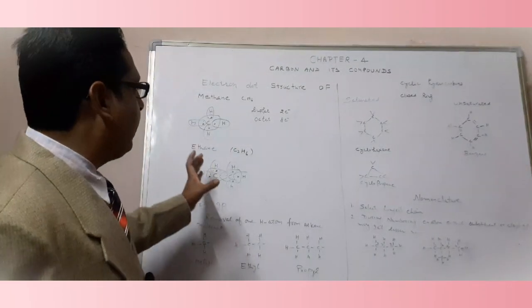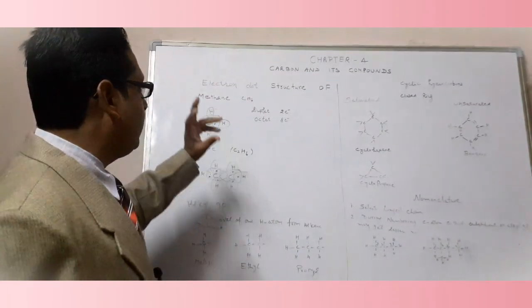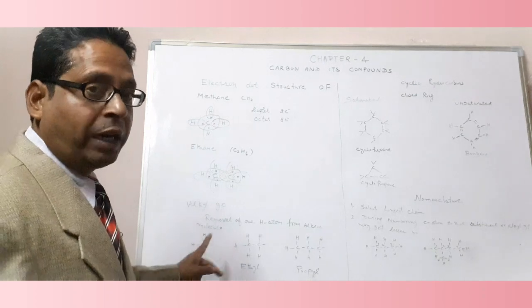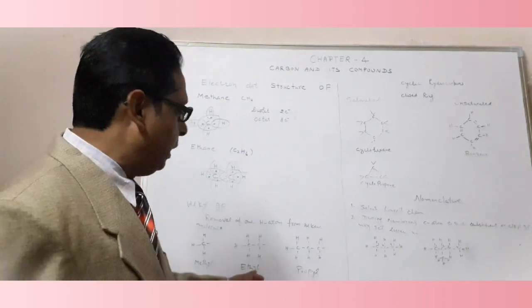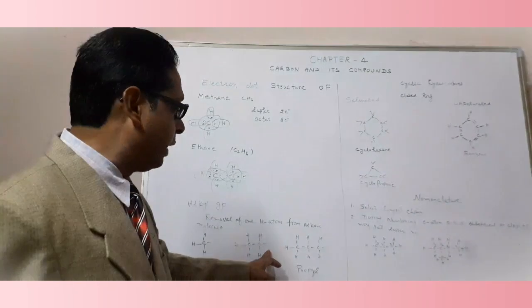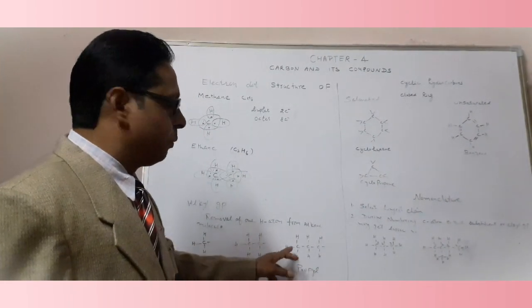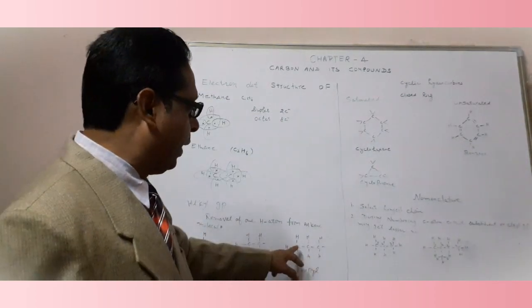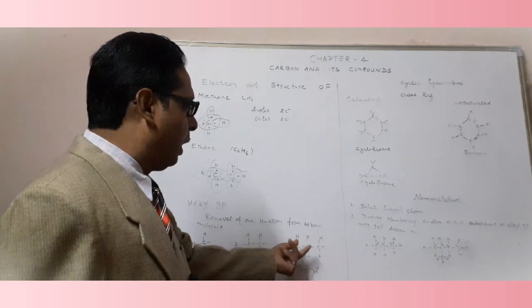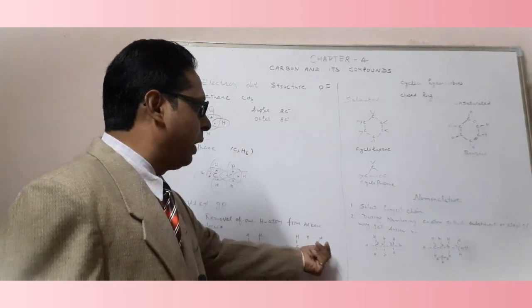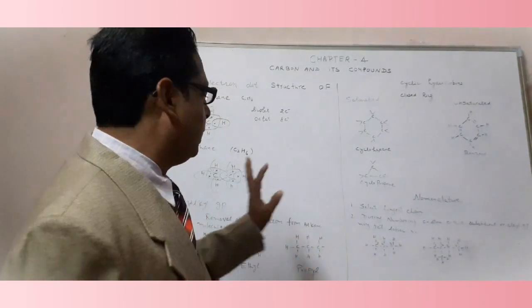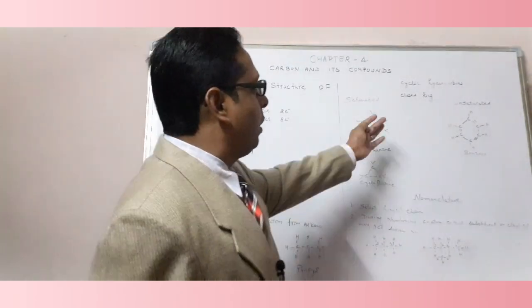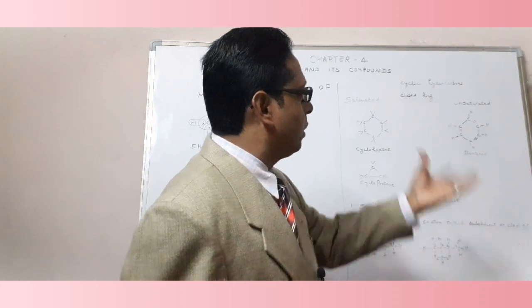We have methane, ethane, propane, and butane of the alkane family. An alkyl group is formed whenever any hydrogen is removed from an alkane. If we remove one hydrogen from methane, we get the methyl group. Ethyl has two carbon atoms, propyl has three carbon atoms with one hydrogen removed. All of these belong to the alkyl family.